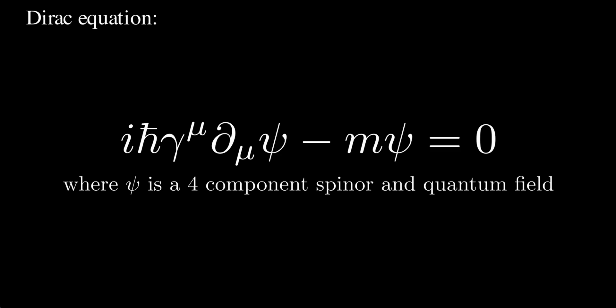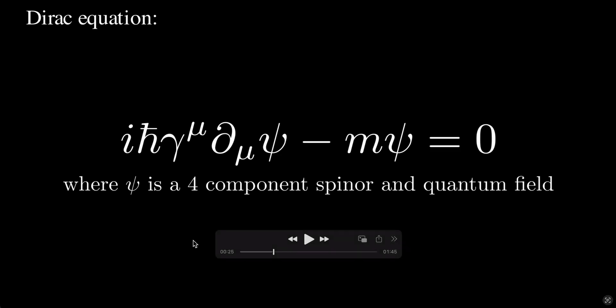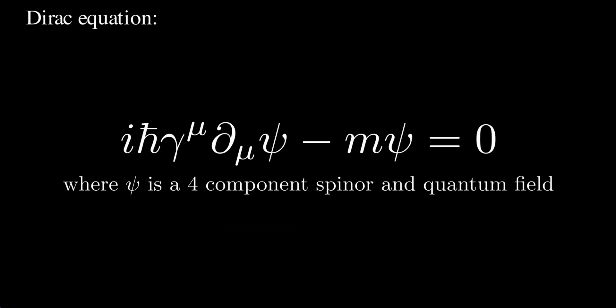In modern quantum field theory, the Dirac equation is really a classical equation of motion. But when we promote Psi to a field — since it's an operator — it also fulfills time differential equations like the Heisenberg equation and other quantum operator differential equations.